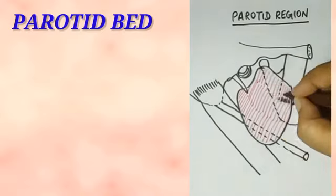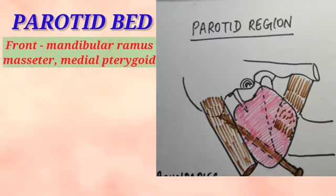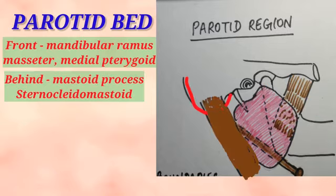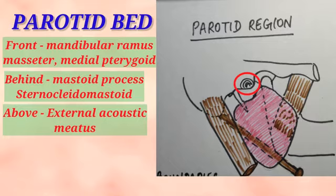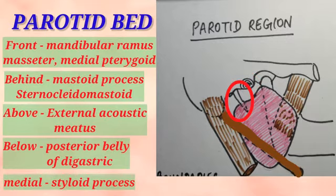The parotid bed is a fascial lined space which contains the parotid gland. This parotid bed is bounded by the following structures: in front, the posterior border of the ramus of the mandible with the masseter and medial pterygoid on its medial aspect; posteriorly, the mastoid process and the sternocleidomastoid; above, the external acoustic meatus; below, the posterior belly of the digastric muscle; and medially, the styloid process and its muscles.